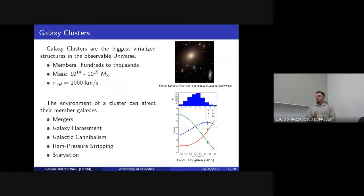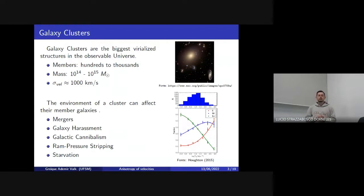The galaxies tend to come together to form structures known as clusters and groups. The clusters are the biggest structures in the universe; they can have hundreds to thousands of galaxy members. We think that the environment of clusters can affect the galaxies through main processes like mergers, galaxy harassment, galaxy cannibalism, ram pressure stripping, and starvation. We think the way these processes affect the galaxy depends on the orbits of the galaxies in the clusters. Because of this, in this work we study the orbital profiles of different galaxy populations in clusters.